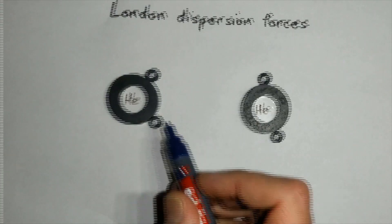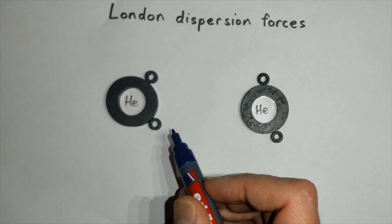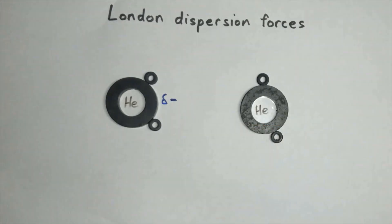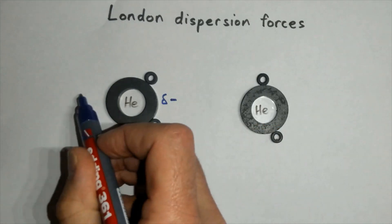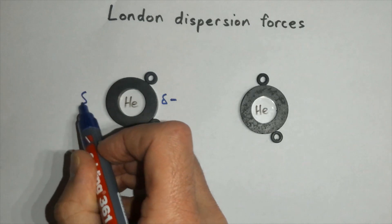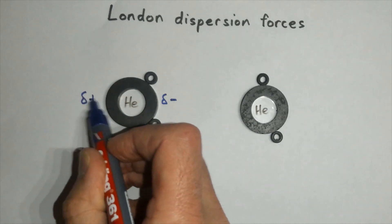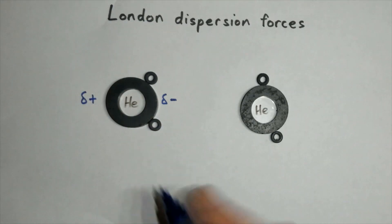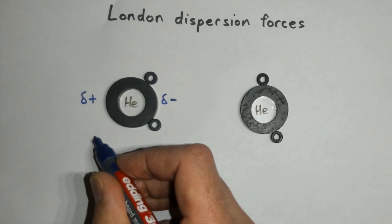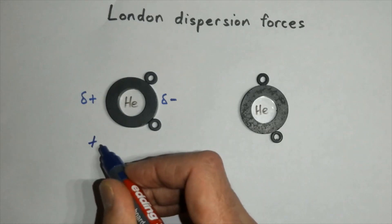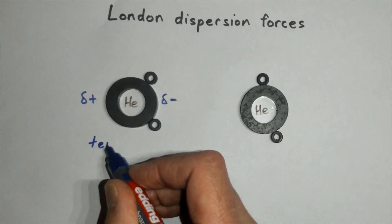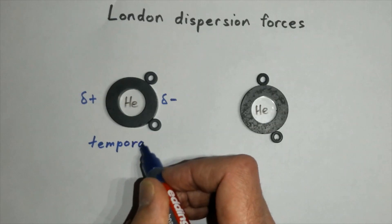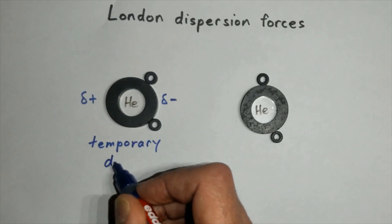This movement of electrons to one side of an atom will generate a negative charge — a delta negative charge at one side of the atom — resulting in a positive charge at the other side of the atom. This difference in charge, because it happens only at an instant, is referred to as a temporary dipole.